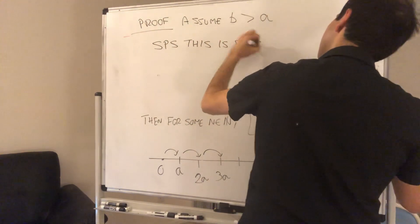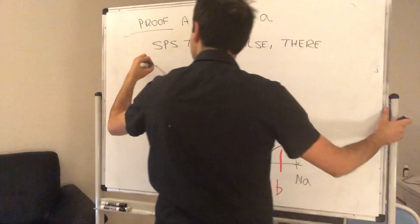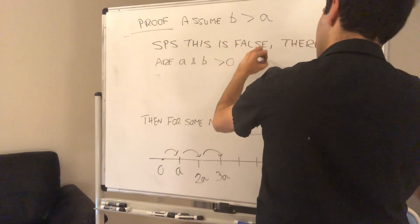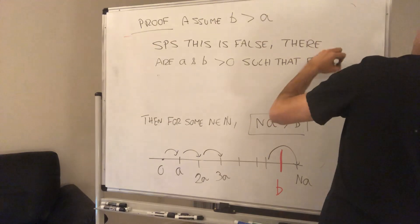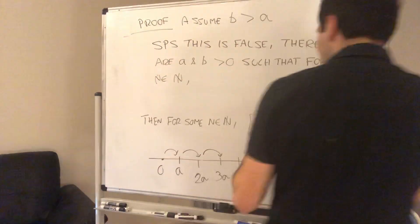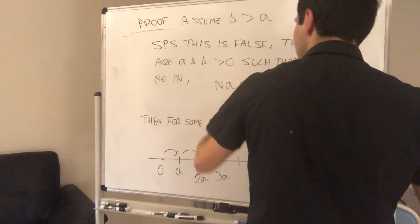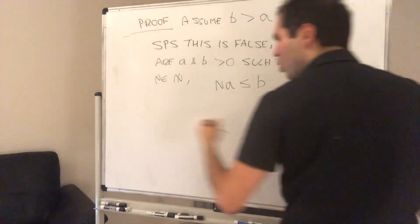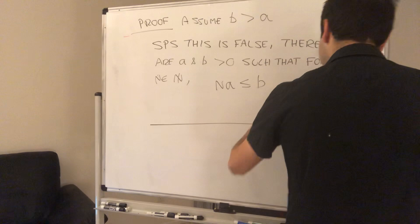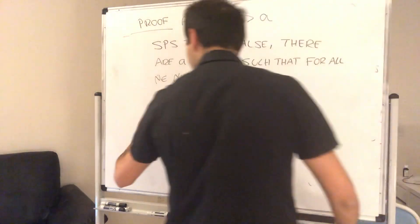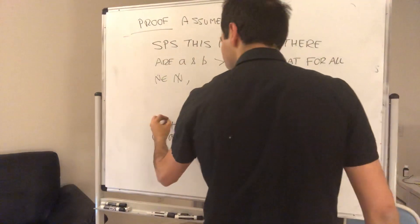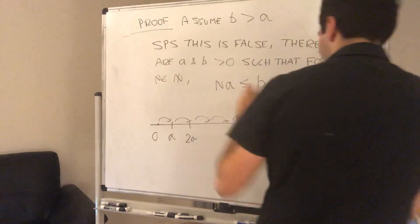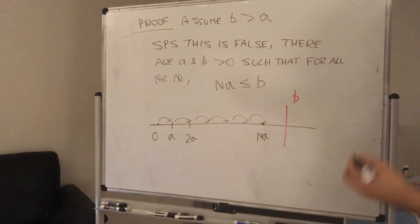Suppose this is false. That is, there are some real numbers A and B positive such that for all N, we can never go above B. So NA is always less than or equal to B. In other words, suppose you have the following scenario: there is some total that's just impossible to attain. This is B. And no matter how you start, you can never get above B.